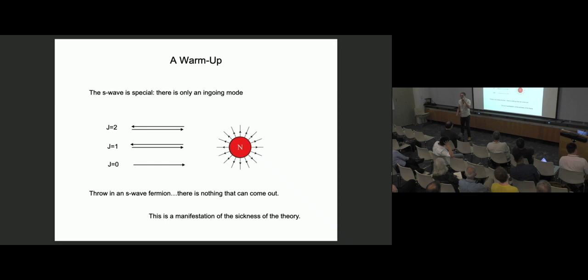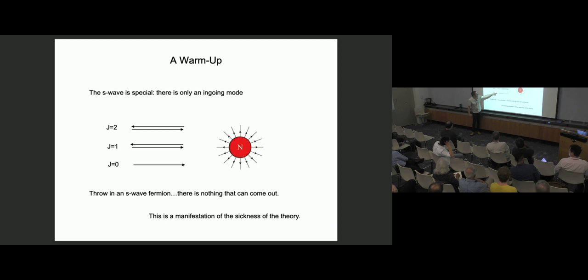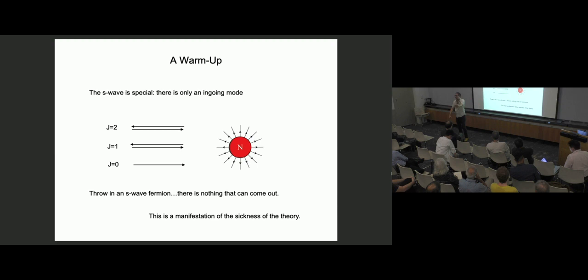The lowest angular momentum mode is special for two different reasons. First, it's helicity polarized: the lowest angular momentum mode only has an ingoing mode and does not have an outgoing mode — the same statement as the lowest Landau level of graphene being spin polarized, with half the degrees of freedom. Second, the S-wave does not experience an angular momentum barrier, whereas all other modes do. All other modes come in pairs and don't really see the monopole — they bounce back before reaching the core. The S-wave goes all the way in, pierces the core of the monopole. What happens to it? Nothing. The theory is sick, and this is a manifestation of that sickness.